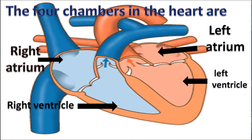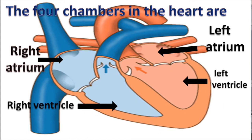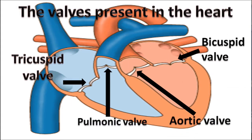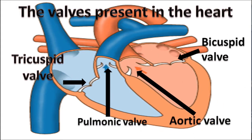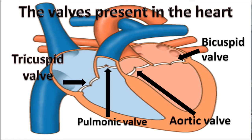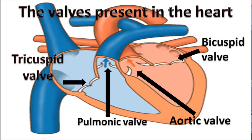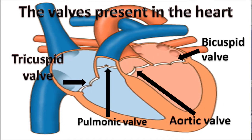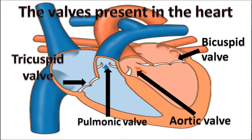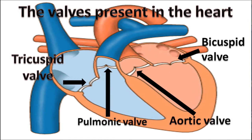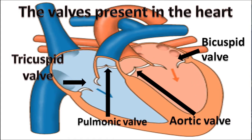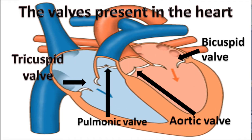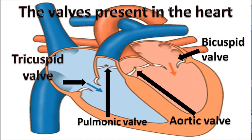The right and left parts of the heart are divided by the septum. The valves present in the heart are: the tricuspid valve, present between the right atrium and right ventricle; the bicuspid valve, present between the left atrium and left ventricle; the aortic valve, present in the aorta; and the pulmonic valve, present in the pulmonary artery.